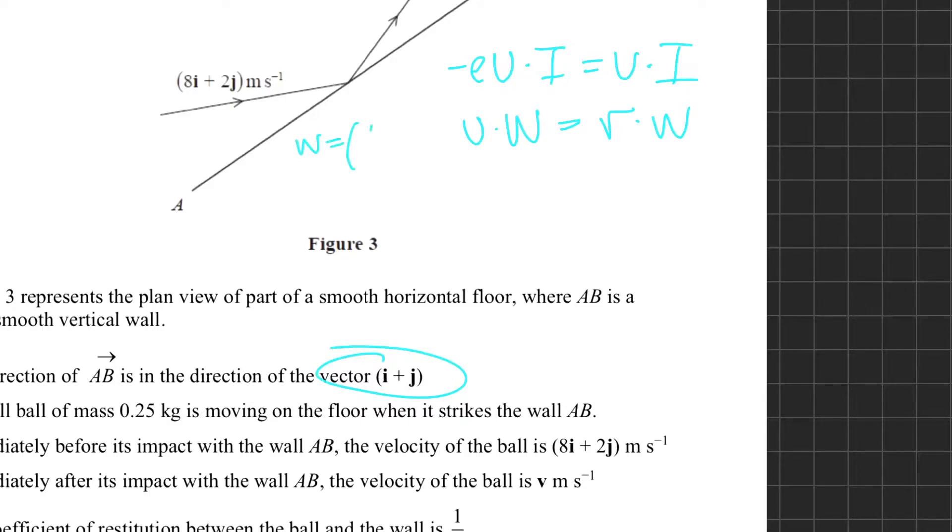Now to find the impulse vector, we can either use the impulse equation I = m·Δv with our vectors, so impulse is a vector and v is a vector, or we could just use the fact that the impulse is always perpendicular to the wall.